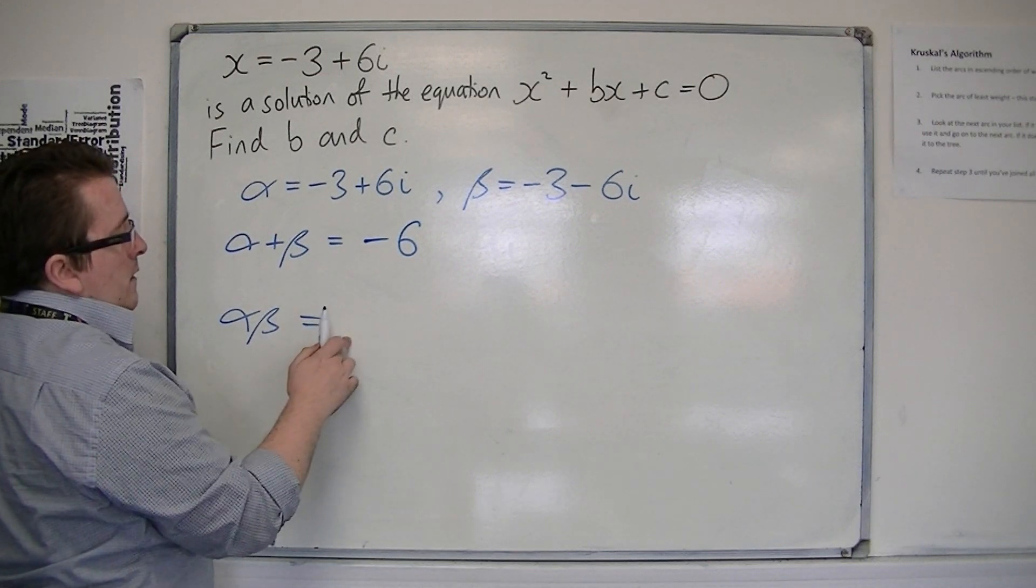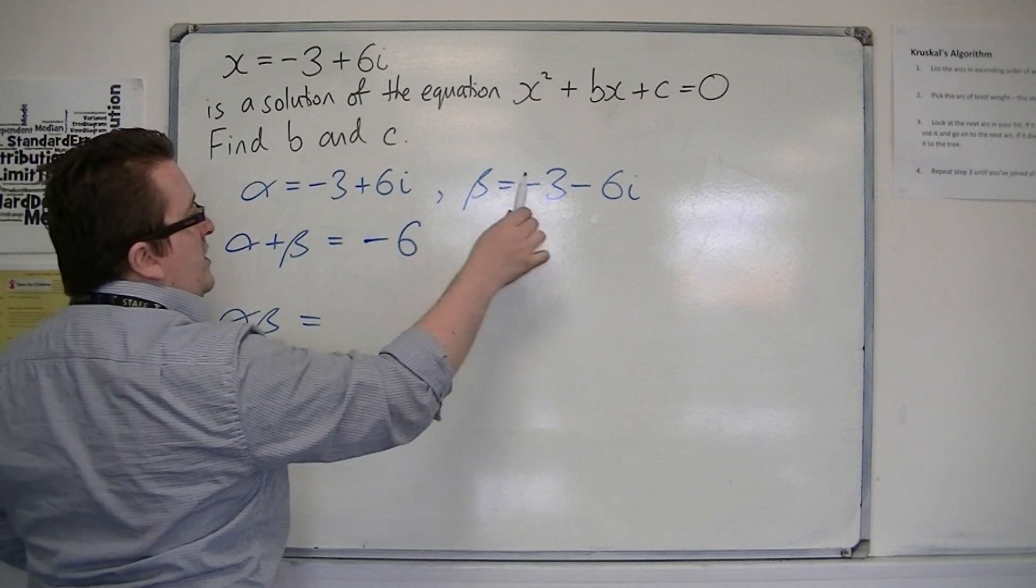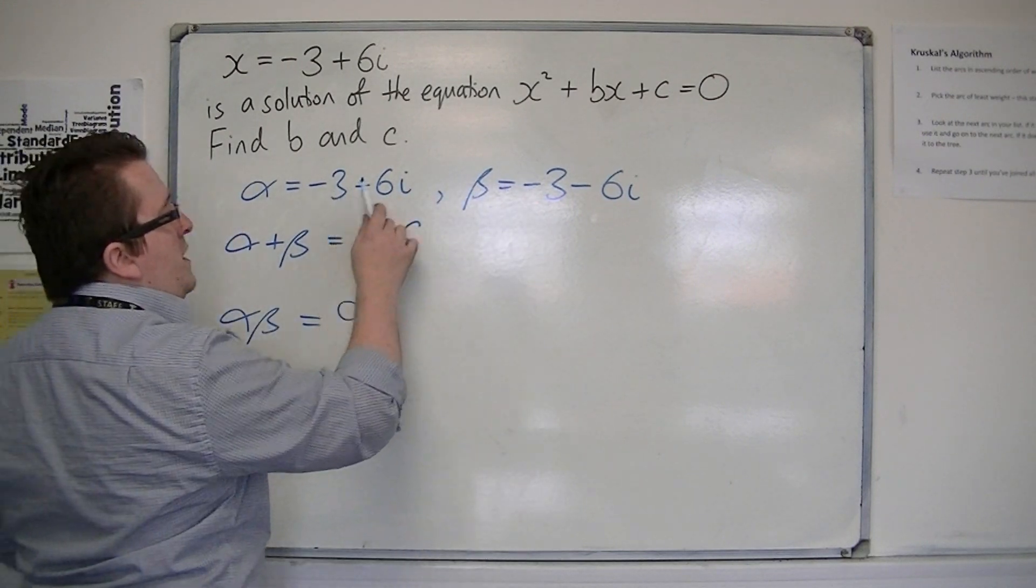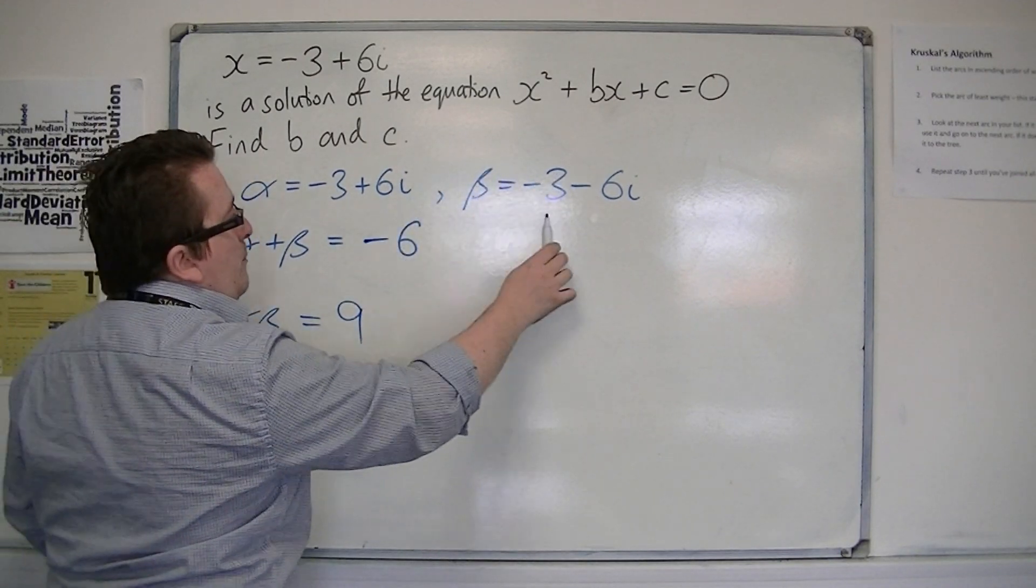Now, if I find the product of these two, minus 3 times minus 3 is 9. Minus 3 times minus 6i and 6i times minus 3 cancel each other out.